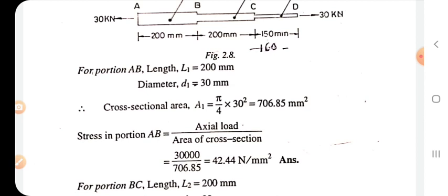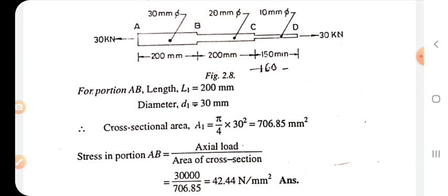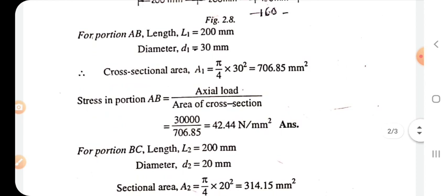For portion AB, length L1 = 200 mm, diameter d1 = 30 mm. Cross-sectional area A1 = (π/4)d² = (π/4)(30)² = 706.85 mm². Stress in portion AB = axial load / area of cross section = 30,000 / 706.85 = 42.44 N/mm².